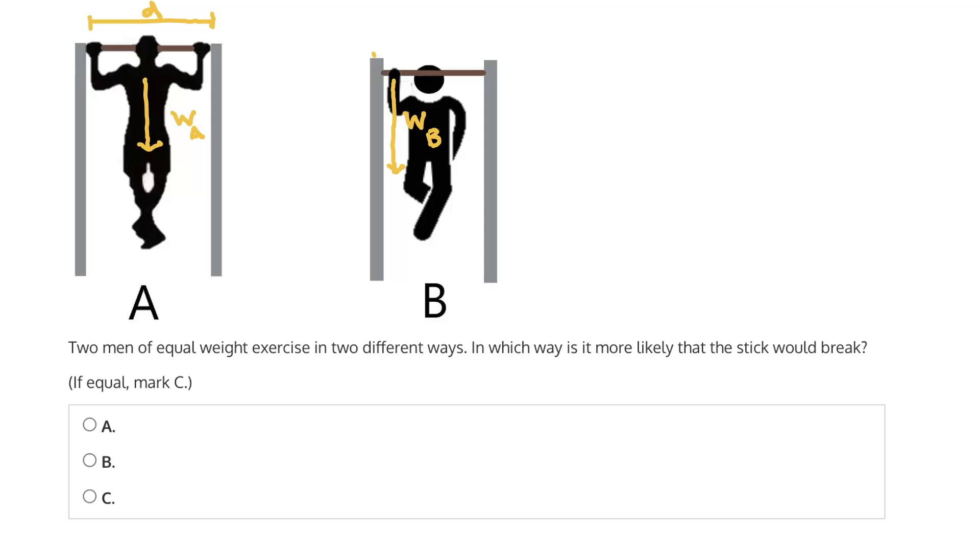So there will be a reaction force, just as there is on the right, which we can call R, again, in both cases on this left support beam. Now, we have this distance D of the stick, but in person A's case, because they're using two hands and the weight is distributed in the middle of the stick, the reaction force is going to be equal to one-half of the weight.